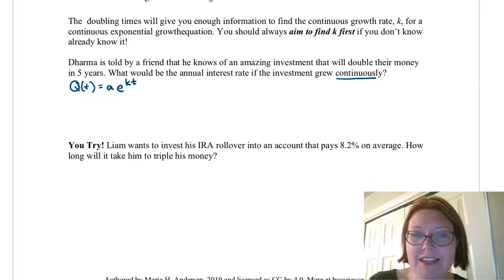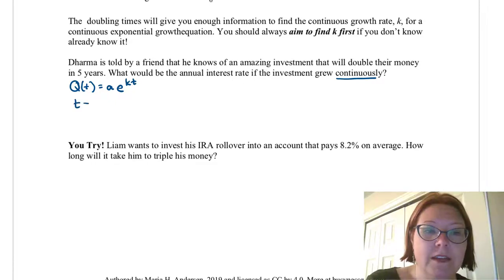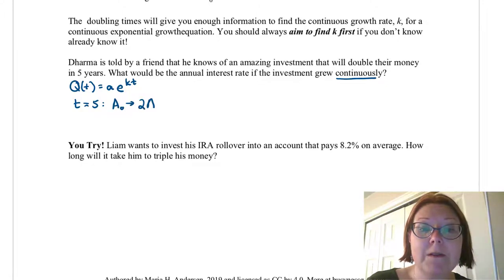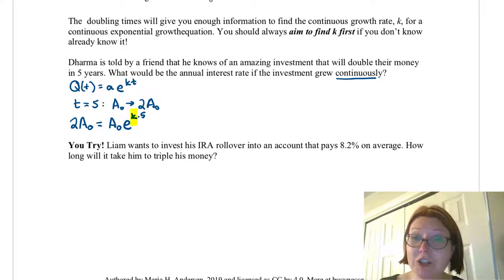Now we know that the time it takes to double is five years and in five years we go from capital A sub-zero to two times capital A sub-zero. We're doubling our money. Let's go ahead and put those into our q of t formula. So we would write two capital A sub-zero equals capital A sub-zero e to the k times five. And the only variable left in this problem is that k in the exponent. So we should be able to solve it.